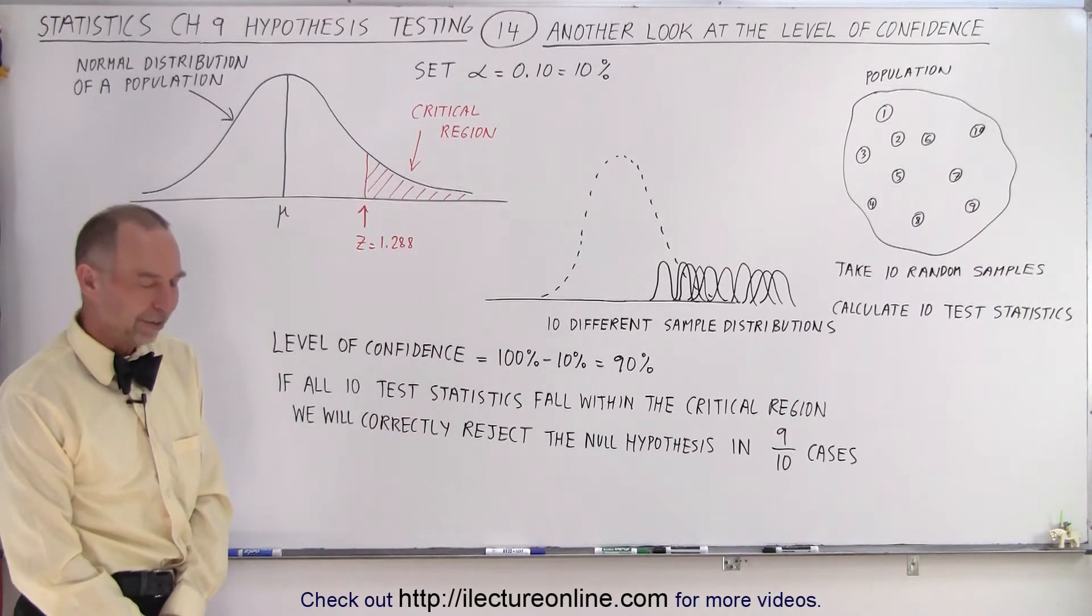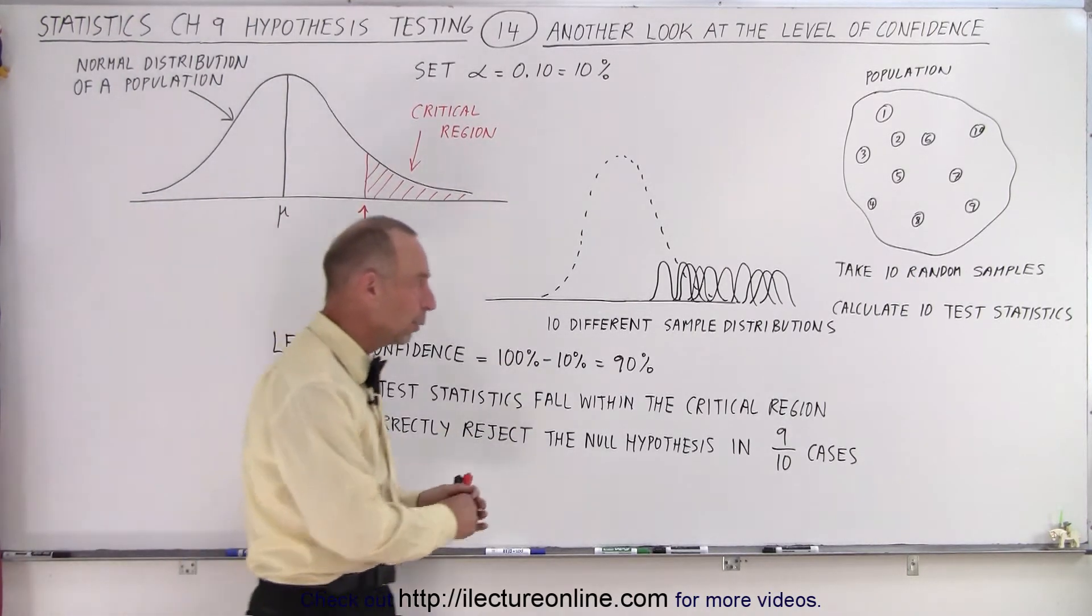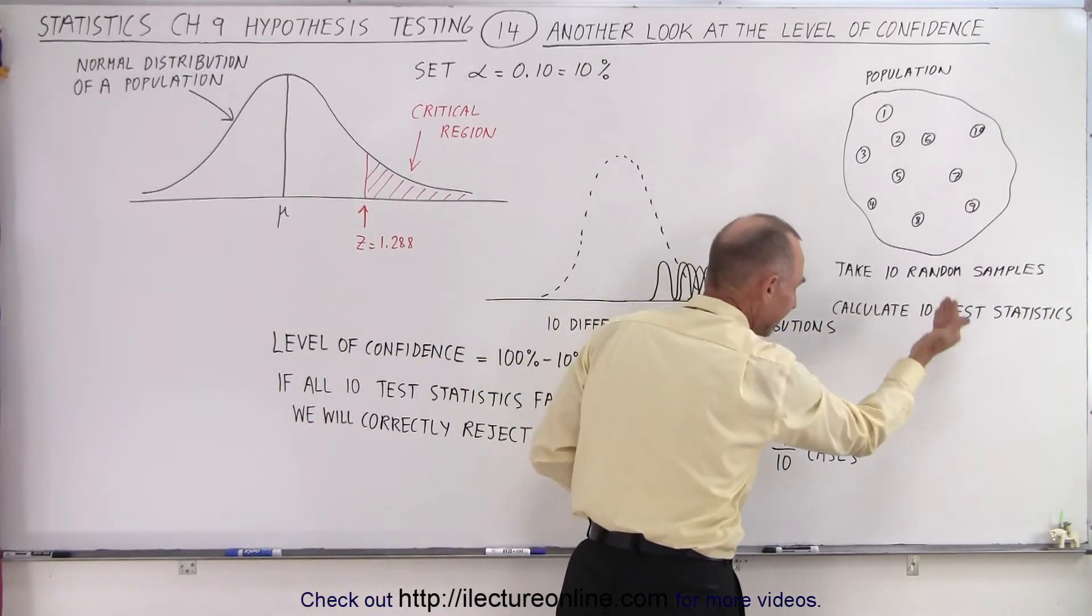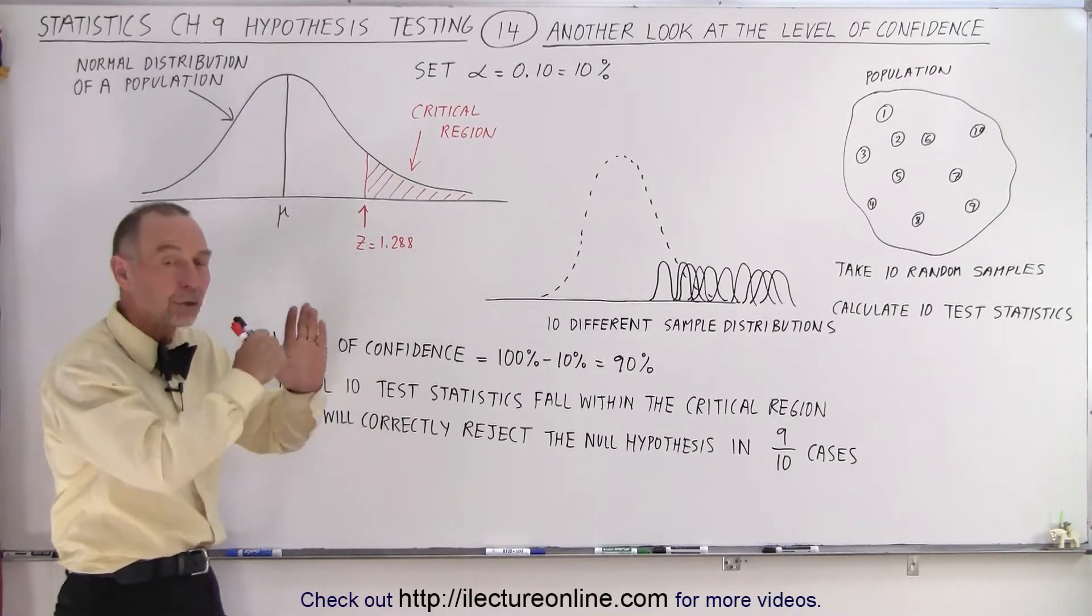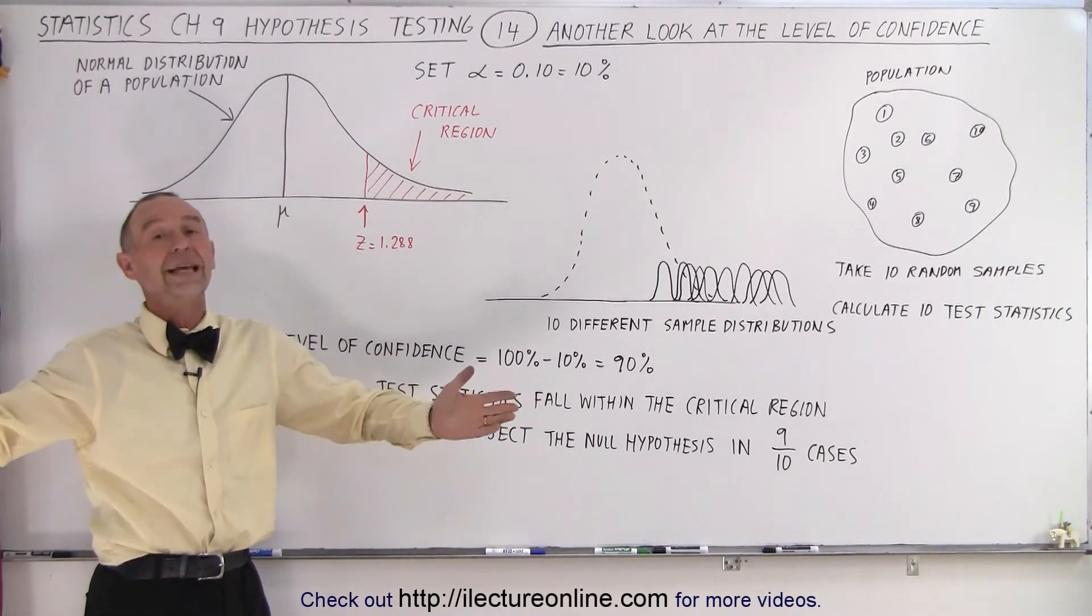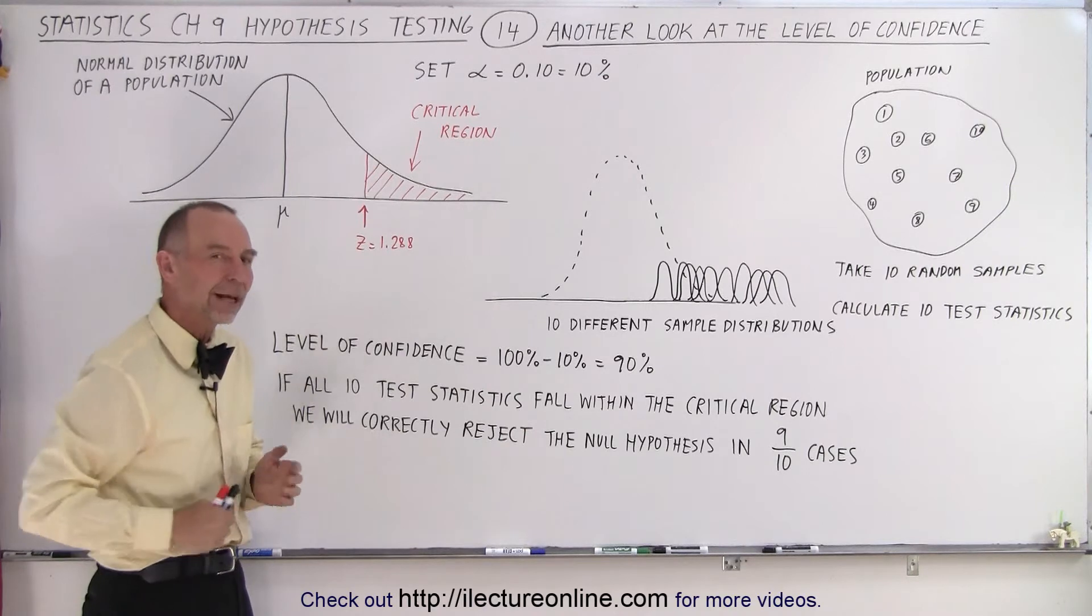What if we do 10 tests? We take 10 random samples, we calculate 10 test statistics, and every one of those test statistics ends up in the critical region. So in all 10 cases, we would reject the null hypotheses.